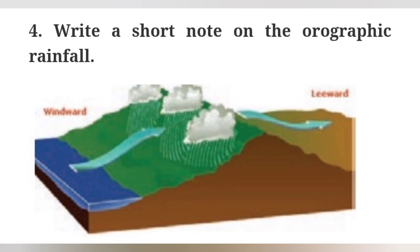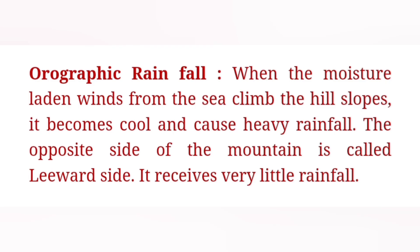Question 4: Write a short note on Orographic rainfall. When moisture-laden winds from the sea climb the hill slopes, they become cool and cause heavy rainfall. The opposite side of the mountain is called the leeward side, which receives very little rainfall.